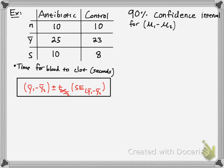So let's jump into an example here. So say we have an antibiotic we're testing and we have a control group. We pull 10 sample size from each. So we give 10 people the antibiotic and 10 people the control. We'll say this is an experiment for blood clotting in terms of seconds. So we get the sample means to be 25 seconds and 23 seconds respectively, and the standard deviation is 10 and 8. So we want to conduct a 90% confidence interval for the difference between these two means.